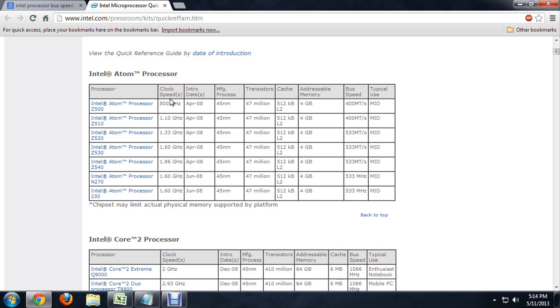So if we look over here, we're inside the Intel processor quick reference chart. It gives us clock speeds and all of that, which is how fast the processor actually is.